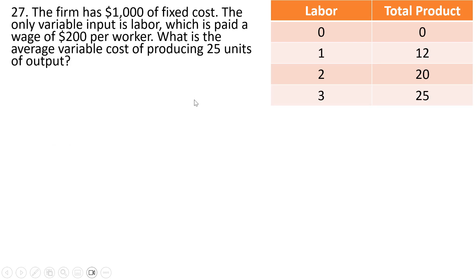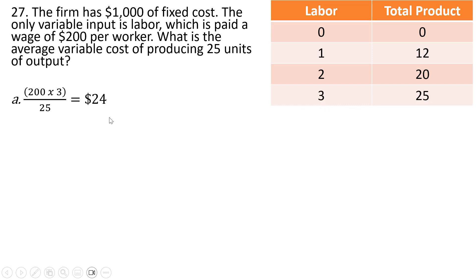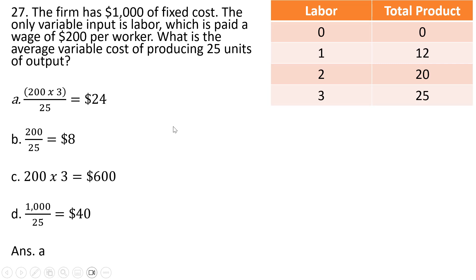Another table question. The firm has $1,000 of fixed cost; the only variable input is labor, paid a wage of $200 per worker. What is the average variable cost of producing 25 units of output? At 25 units of output, the firm requires 3 workers. Three workers paid $200 each is the total variable cost. Dividing by the output gives average variable cost of $24. The correct answer is A.